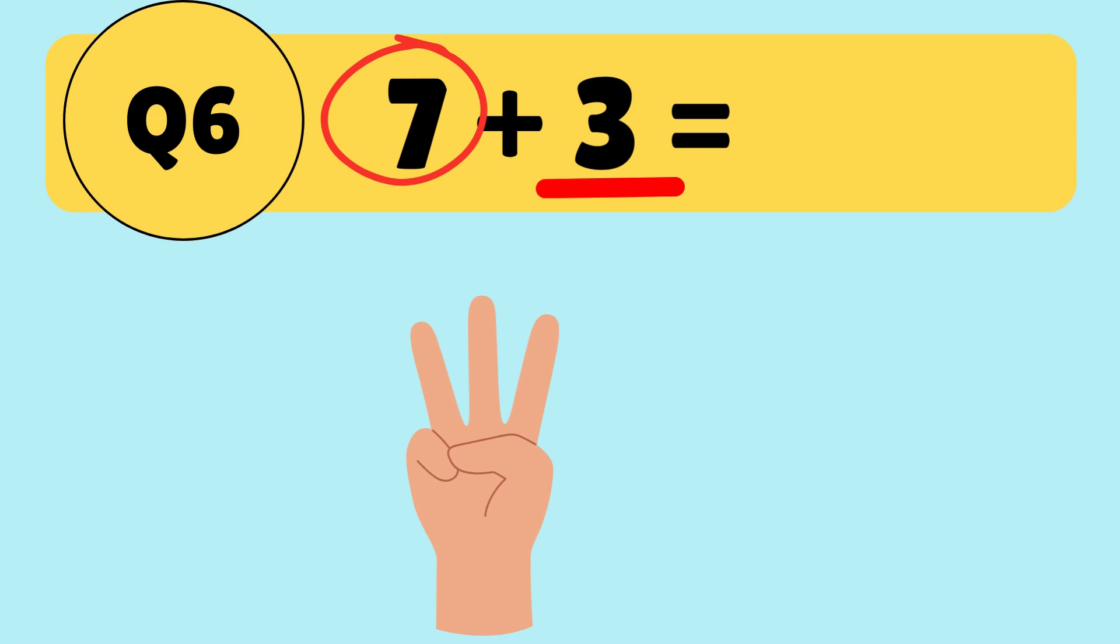Let's hold up 3 fingers and count from 7. 7, 8, 9, 10. So 7 plus 3 is equal to 10. Excellent work!